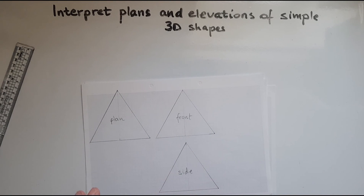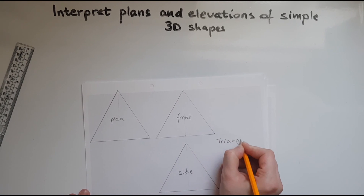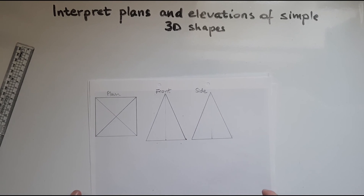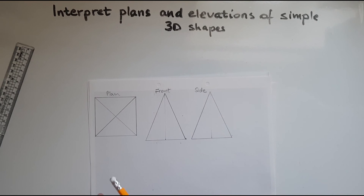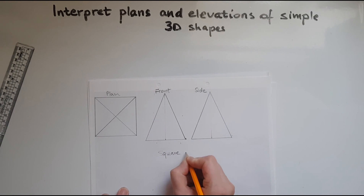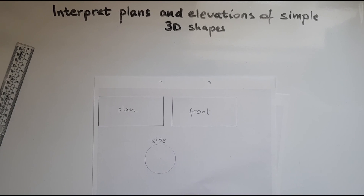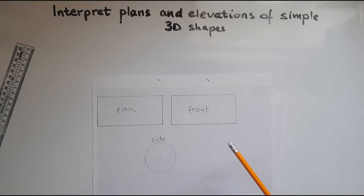Triangles all the way: a triangle at the base, a triangle on the side, a triangle on the front — this shows that this is a triangular base pyramid. And looking at this one: it's a square at the base with diagonal lines at the top, and at the front and side we can see triangles, so this must be a square based pyramid. Finally, we've got a rectangle from the top, a rectangle at the front, and a circle on the side. The only shape we looked at with a circle was a cylinder.